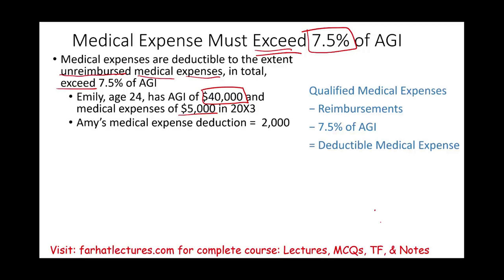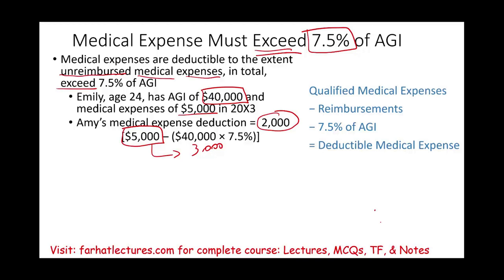She can only deduct $2,000. Her unreimbursed medical expenses are $5,000. The threshold is 7.5% of $40,000, which equals $3,000. So she is $2,000 in excess of the threshold, because $5,000 minus $3,000 equals $2,000.